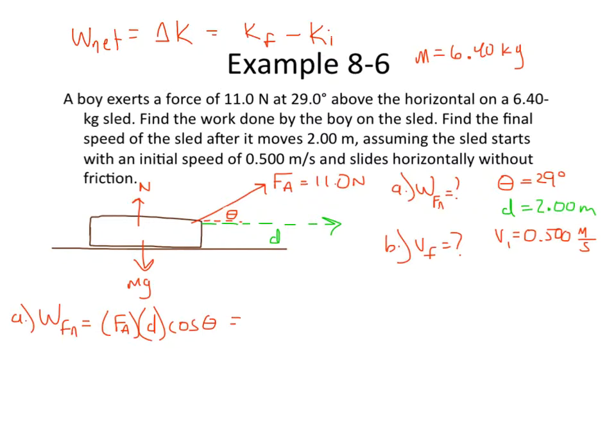Let's just go ahead and plug our values in and see what kind of work the boy does on the sled. So that force is going to be 11.0 newtons times 2.00 meters times the cosine of 29 degrees. That's going to give us our work done by the boy on the sled. And I get a total of 19.2. Point two what? Well work and energy is measured in joules, right? So that's going to be joules.